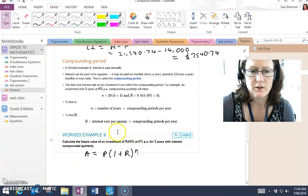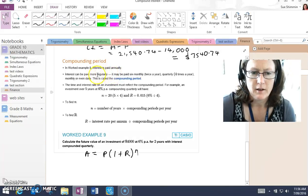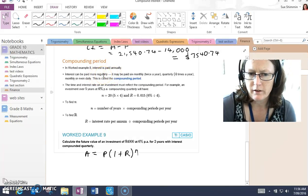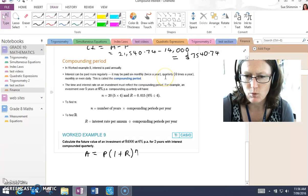In the worked example we just did, interest is paid annually. Interest can be paid more regularly. It can be paid every six months, twice a year, every quarter, four times a year, monthly or daily.